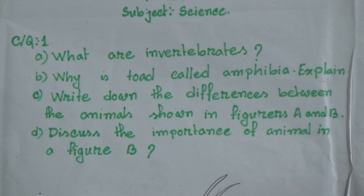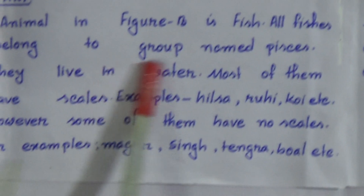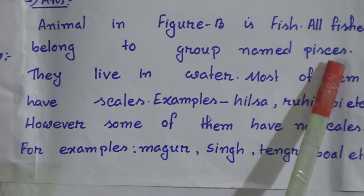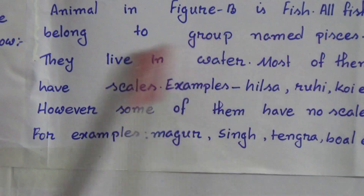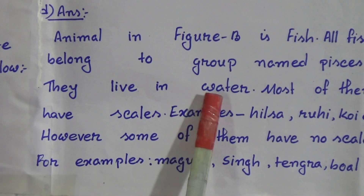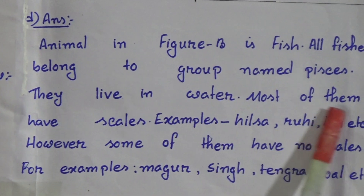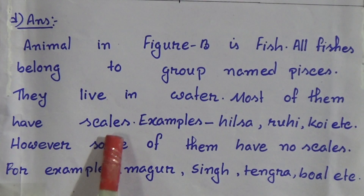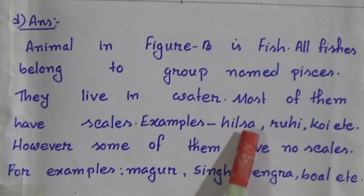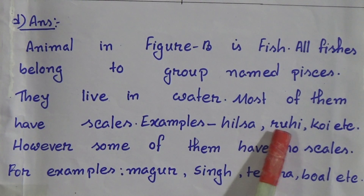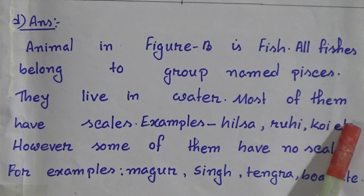The animal in figure B is fish. All fishes belong to the group named Pisces. They live in water, and most of them have scales — for example, Hilsha, Rui, Poi, etc.